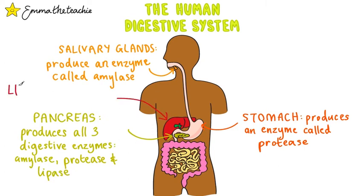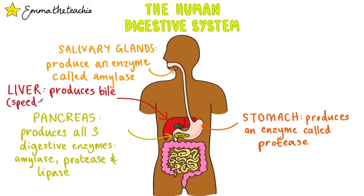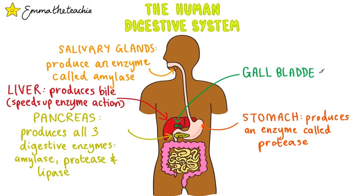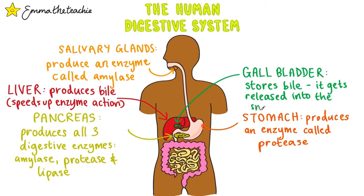Over here we've got the liver — it's a large organ that produces bile. Bile helps by speeding up enzyme action. We will talk a lot more about bile in the video on factors affecting enzymes, so look out for that. Finally, we've got the gallbladder, and this is where the bile is stored before it's released into the small intestines.